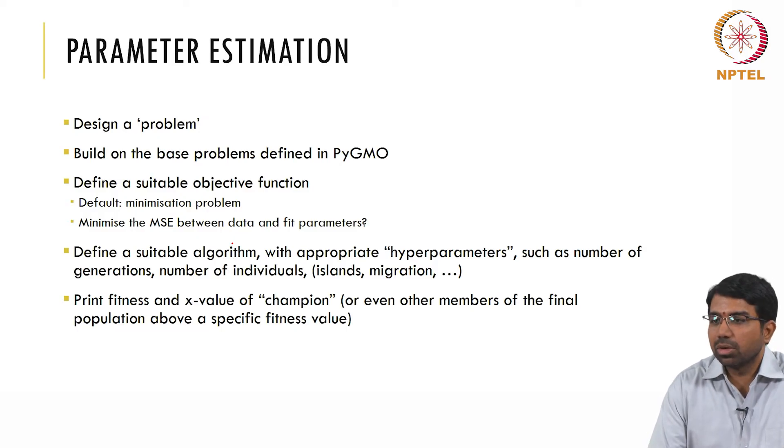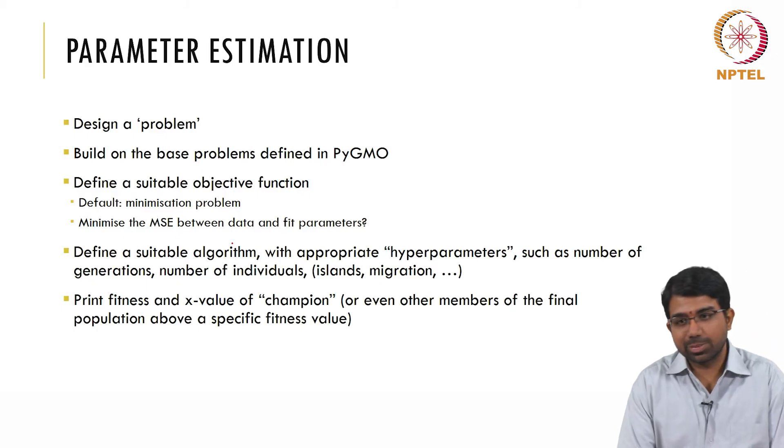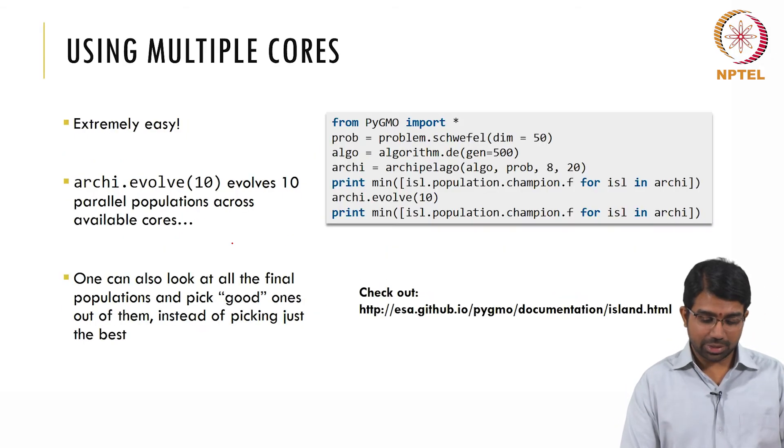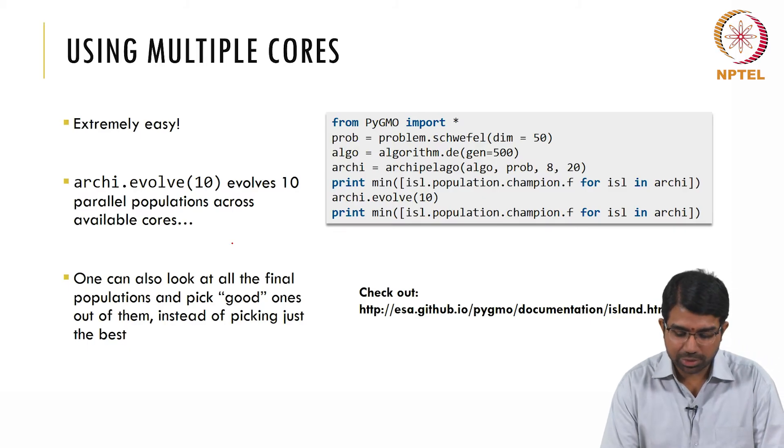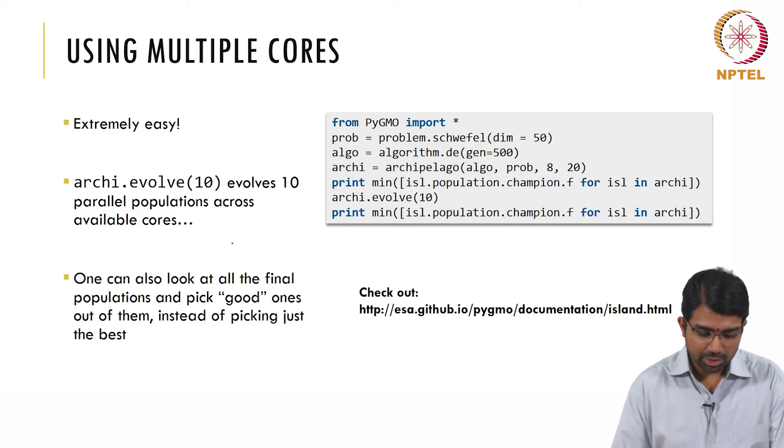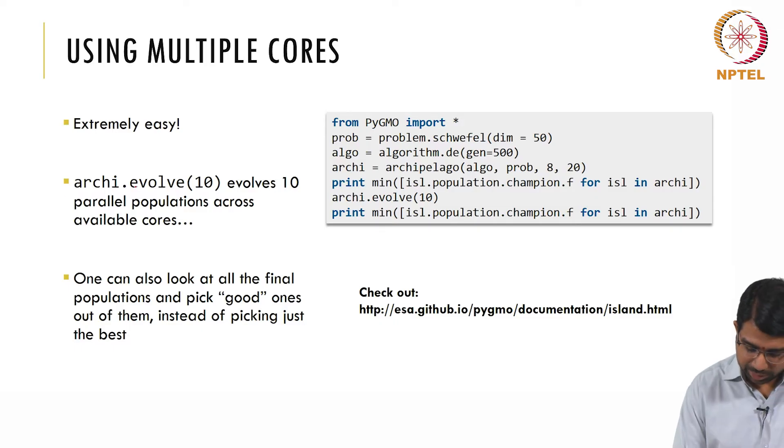And then print the fitness and function, the parameter value of the champion or even other members of the final population above a fitness value. So anything that is less than 5% error, you can print those parameters. And then you can study these parameter spaces. We will come to that in a moment. And it is super trivial to use multiple cores.